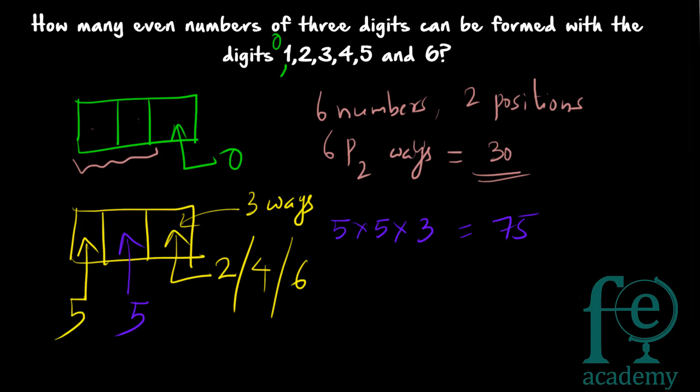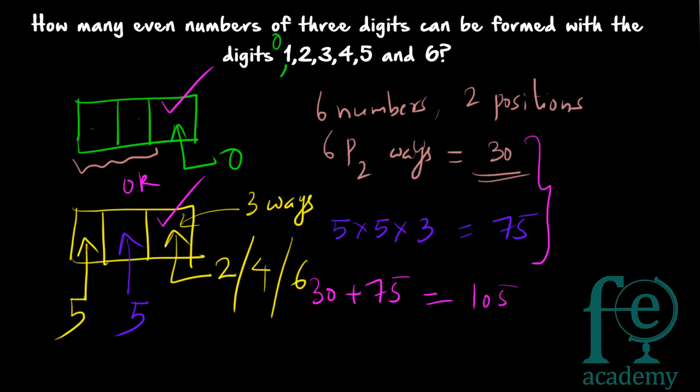Since an even number either ends in 0 or ends in 2, 4, or 6, these are two separate options and we add them: 30 + 75 = 105. So there will be 105 even numbers of 3 digits that can be formed with the digits 0, 1, 2, 3, 4, 5 and 6.